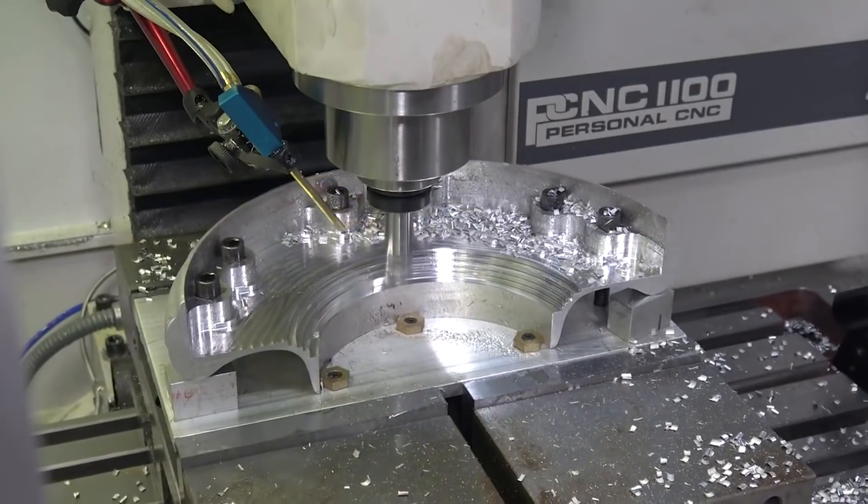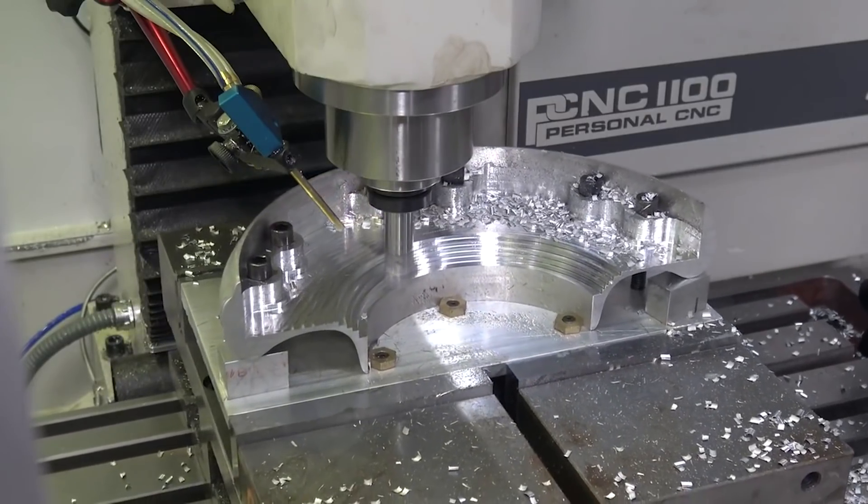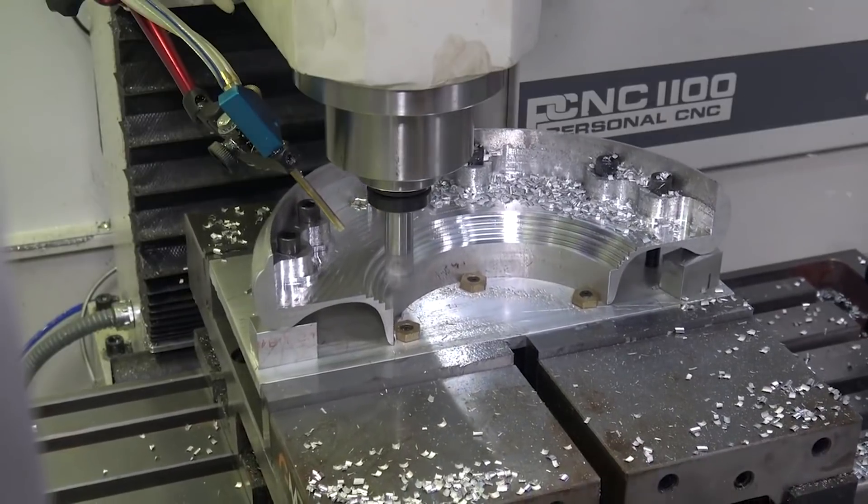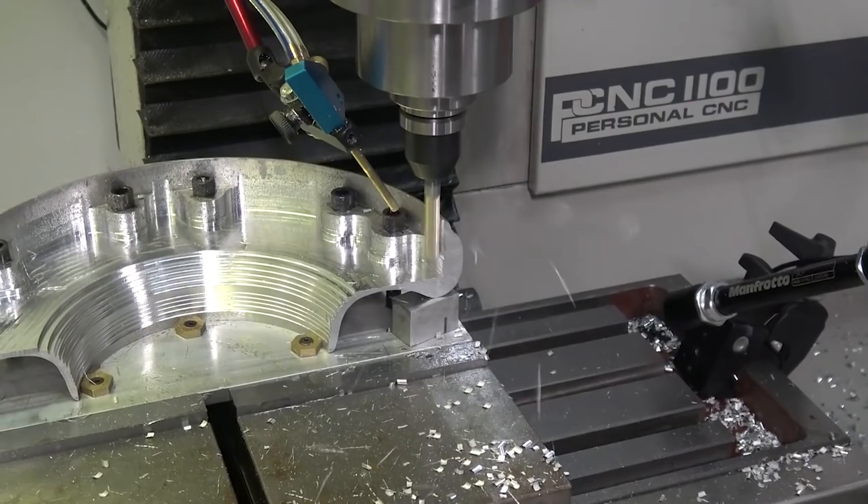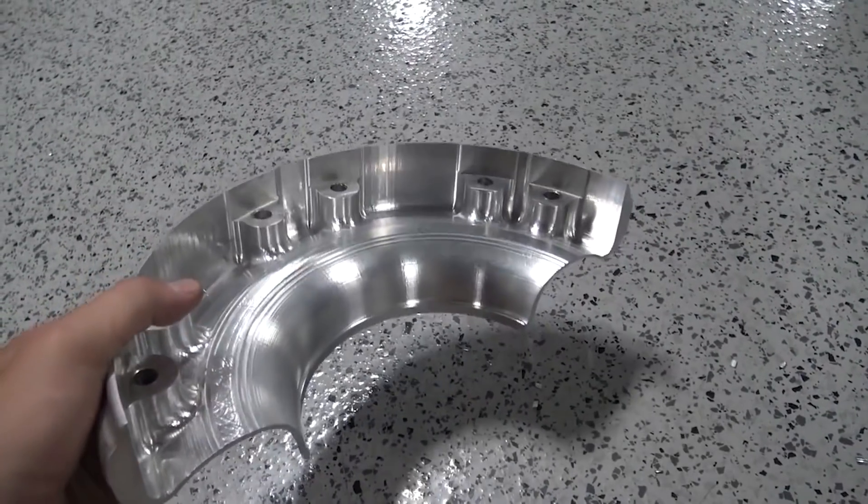The Mighty Byte hex clamps kept the part from shifting on us and the fasteners in conjunction with those spacer blocks provided the majority of the actual work holding. We held that in a pair of vices and that let us get the job done.